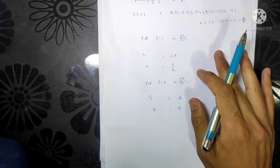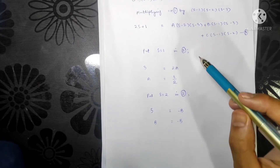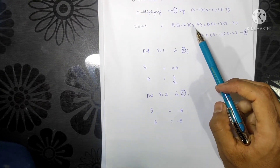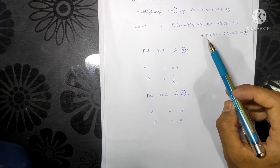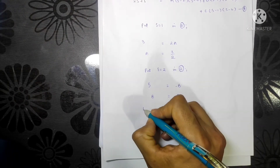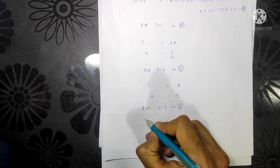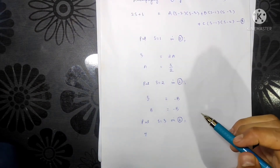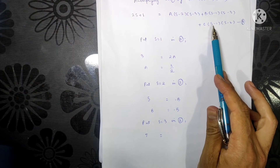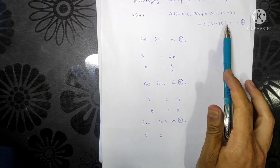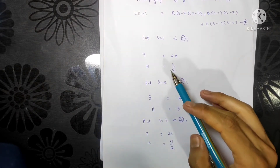Now we find C by putting s equal to 3 in Equation 2. The A and B terms become zero. The LHS gives 2(3) + 1 = 7. We are left with C(3 minus 1)(3 minus 2) = C(2)(1) = 2C. So 7 = 2C, which gives C = 7/2.